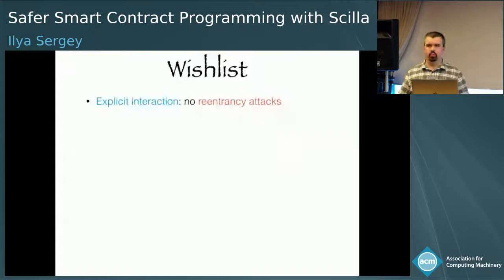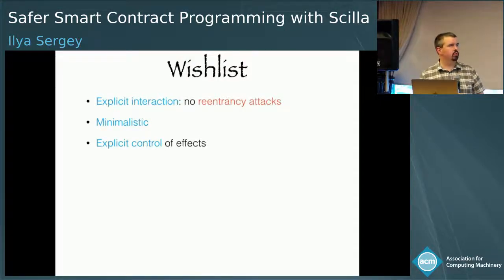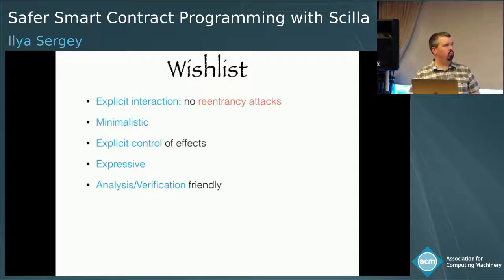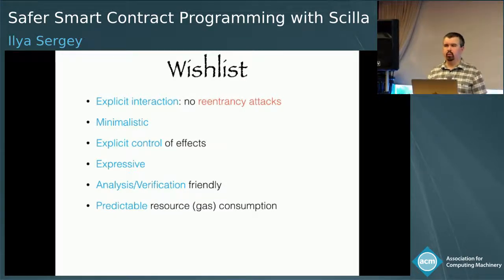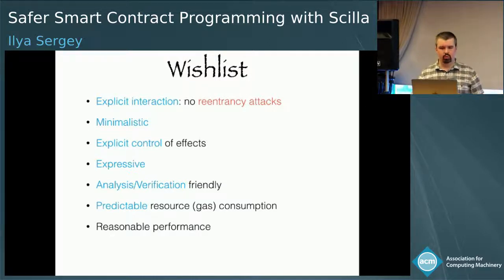First, we really want to make the interaction between contracts explicit — that would allow us to avoid things such as re-entrancy attacks. We want the language to be minimalistic, so it would be possible to fully formally specify and reason about. We want explicit control of effects, so we can know precisely what the contract is doing without relying on implicit elements. We want it to be expressive for implementing the computations people are interested in, but at the same time amenable for analysis and formal verification. We also want predictable resource consumption — known as gas analysis in the smart contract community — and finally reasonable performance, since we are deploying the high-level language.